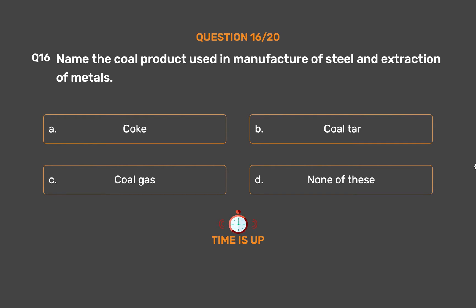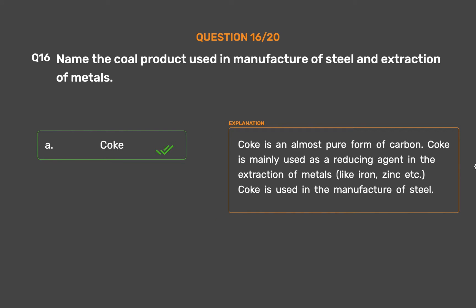The correct answer is Option A: Coke. Coke is an almost pure form of carbon. It is mainly used as a reducing agent in the extraction of metals like iron and zinc, and is used in the manufacture of steel.